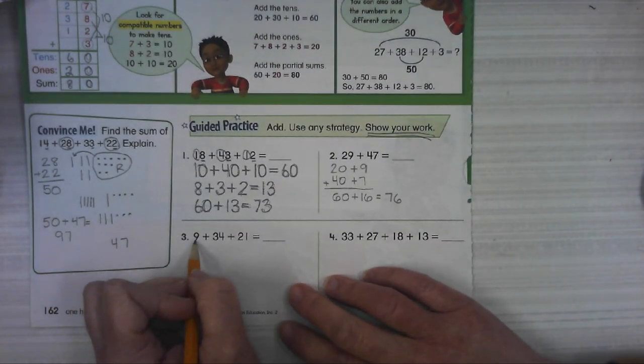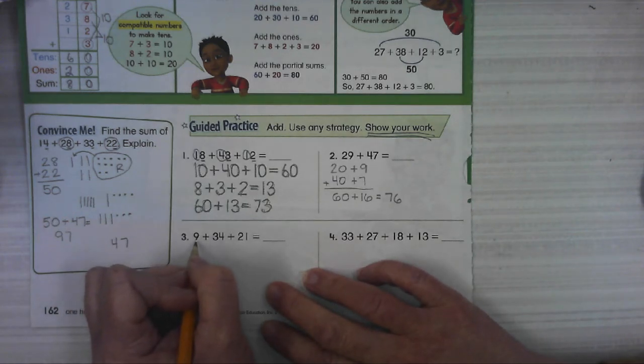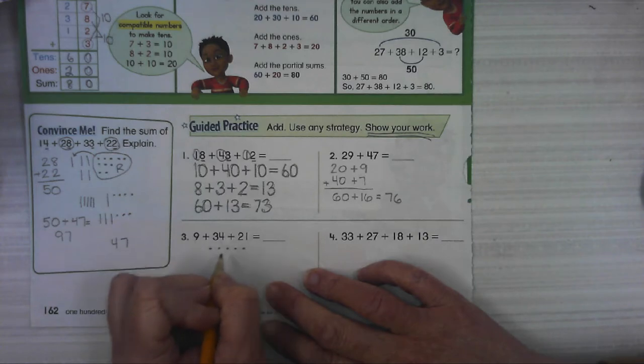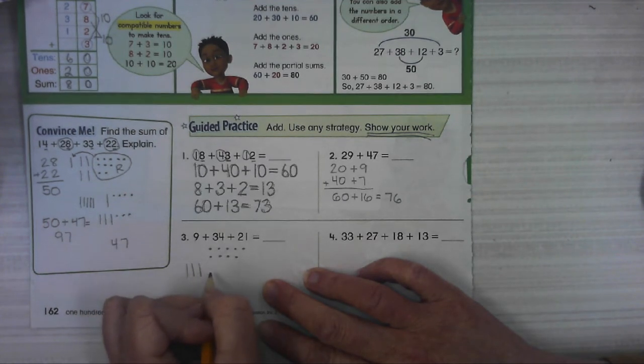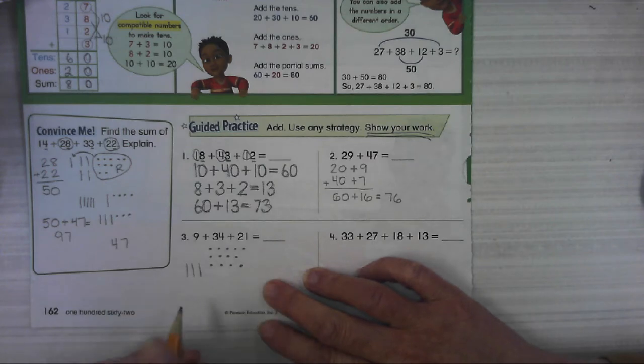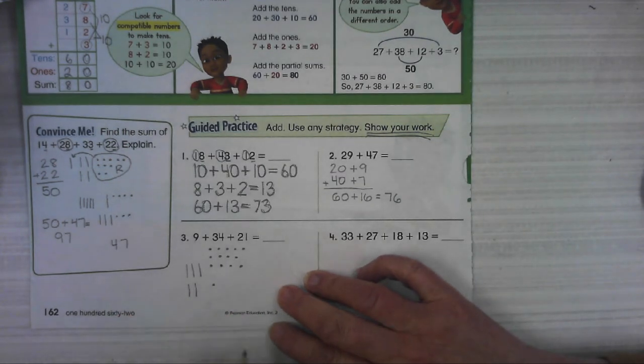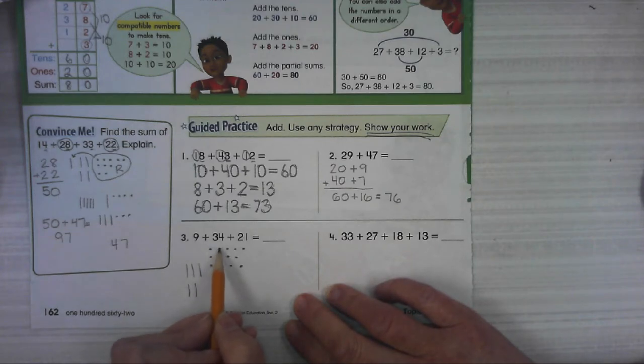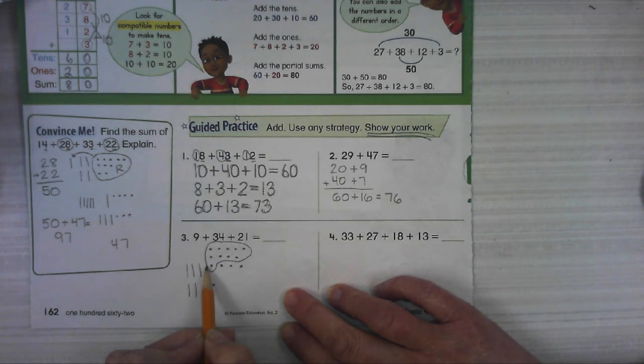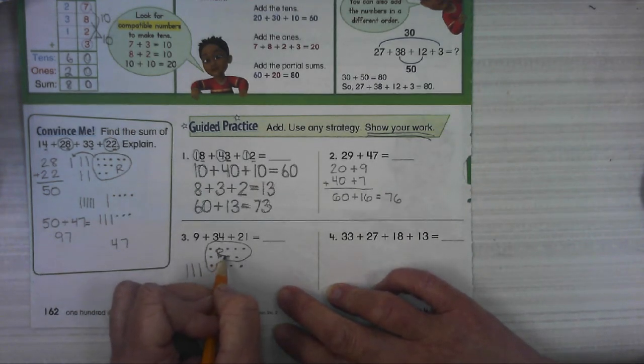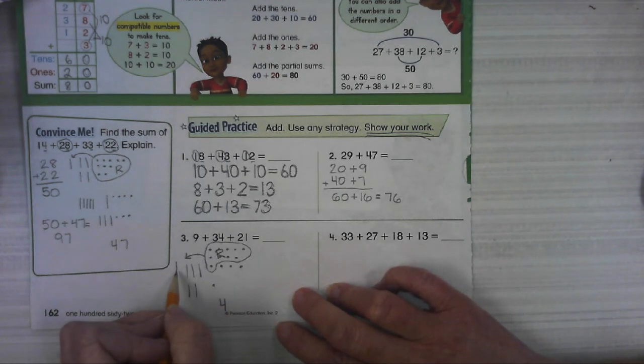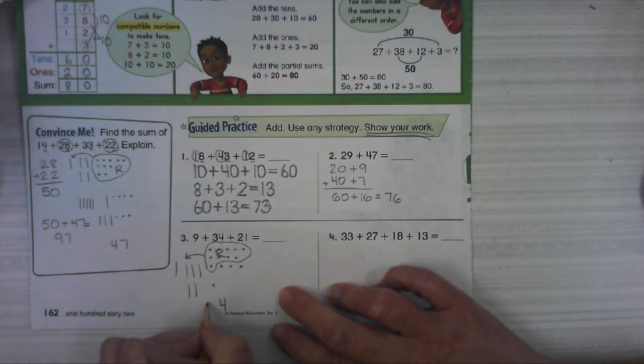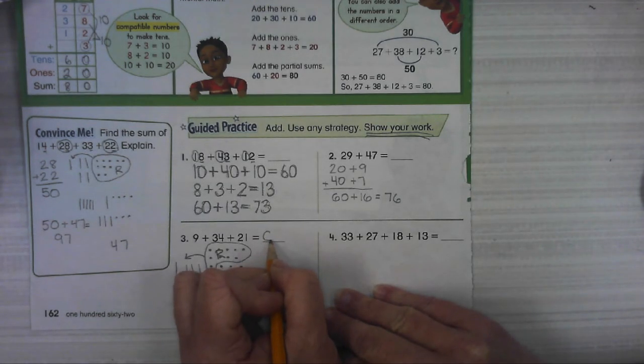For this one, I am going to do base 10 blocks. So first I've got 9 ones, and then I've got 34, and then I've got 21. I'm going to start with my ones. I'm going to count them. 1, 2, 3, 4, 5, 6, 7, 8, 9, 10. Got to regroup it. 1, 2, 3, 4. So we have four ones. 10, 20, 30, 40, 50, 60 in the tens place. So 64 is our sum.